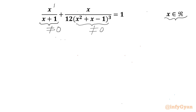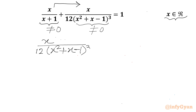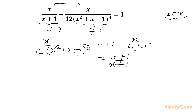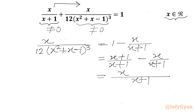Now I will take x over x plus 1 to the RHS. We can write 1 as x plus 1 over x plus 1, then subtract x over x plus 1. Since the denominator is the same, we write x plus 1 in the denominator, and in the numerator it will be x plus 1 minus x. Canceling plus x and minus x gives 1 over x plus 1.